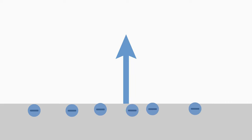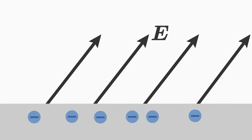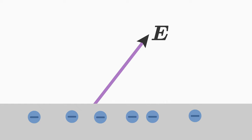The electrons inside the conductor generate an electric field E. The electric field is a vector quantity — it therefore has a magnitude and a direction. Let us assume that the electric field E, generated by the electrons at the surface, would not exit the surface perpendicularly. Let us assume it points in any direction as shown here.